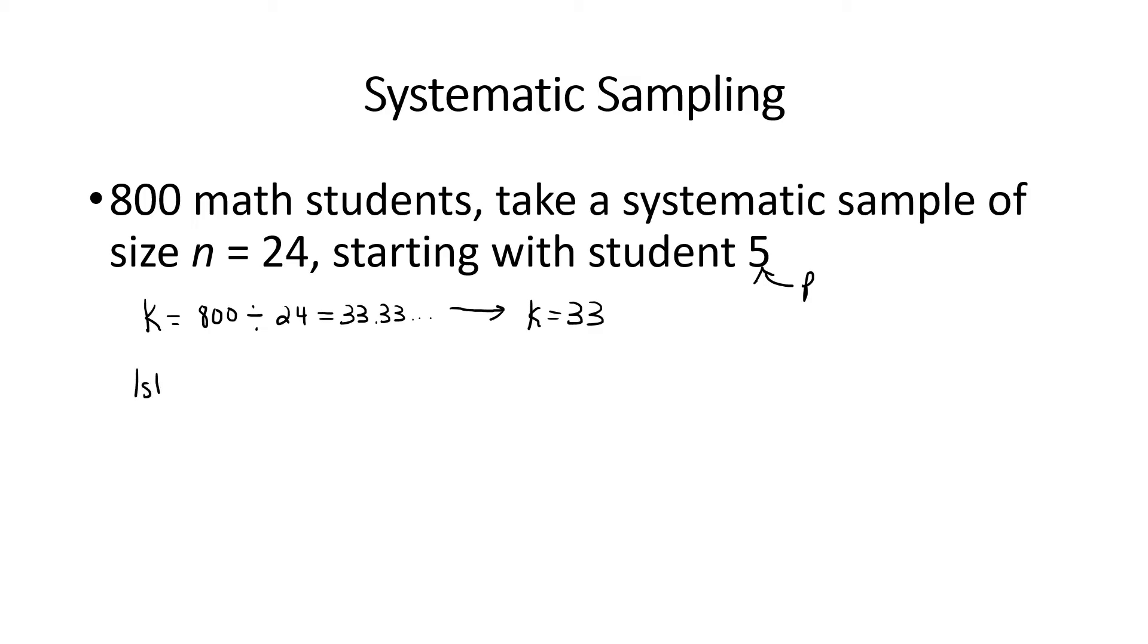The first student that we'll select, we were told it was number 5. What will the number be of the second student? Well, we want to add 33 to that: 5 plus 33 is 38, so student number 38 would be next.